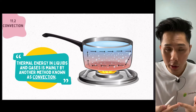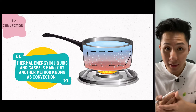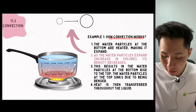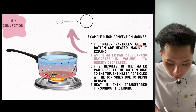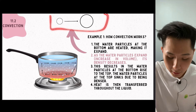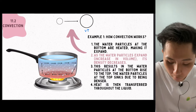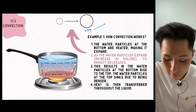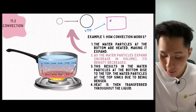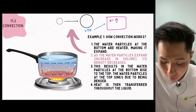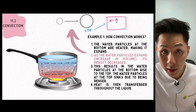Thermal energy in liquid and gas mainly occurs through another mechanism called convection. It works by having particles that are less dense move upwards. Imagine heating up water — the water particles at the bottom are being heated, making them expand. As the water particle expands, the volume increases, and this results in the density of the particle decreasing. The formula for density is d equals mass divided by volume, and because the volume has increased, the density decreases since the denominator is larger.